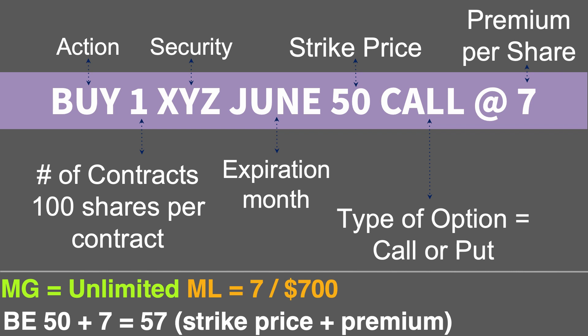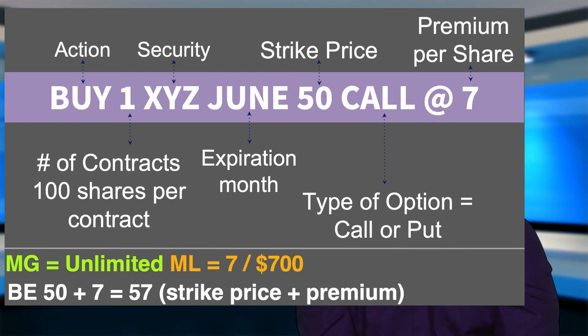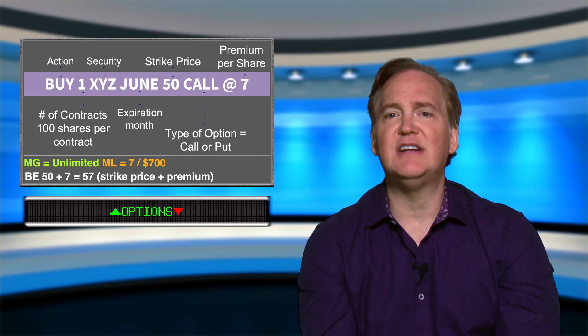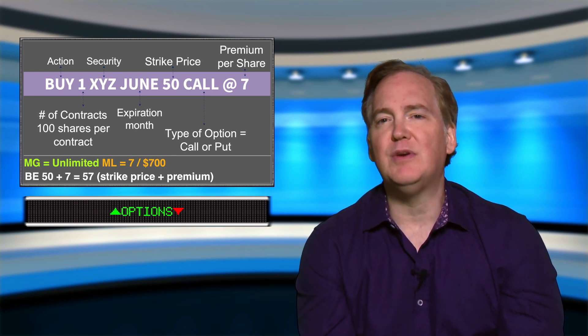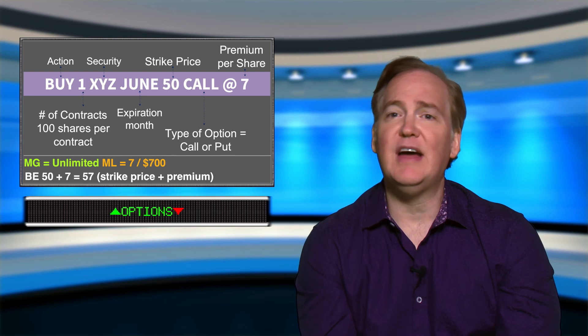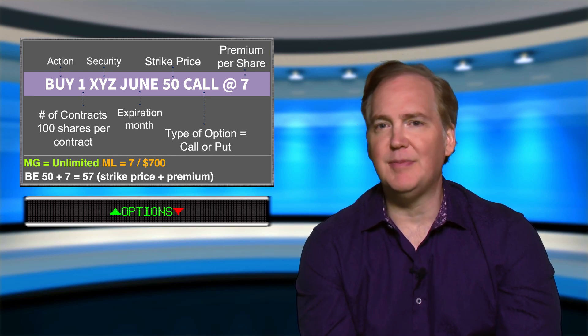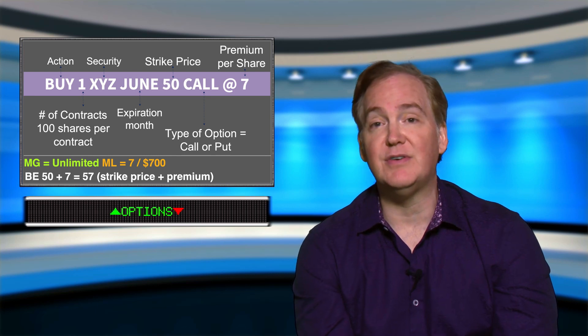Where would XYZ have to be at expiration in June for us to break even? To determine the break even on a call it is the strike price plus the premium. The strike price is $50 and we paid a premium of $7 per share, so we break even at $57. If XYZ was $57 at expiration we would break even. For every penny over that we make money, and for any penny lower we lose money up to our maximum loss of $700.